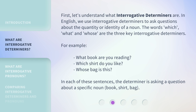First, let's understand what interrogative determiners are. In English, we use interrogative determiners to ask questions about the quantity or identity of a noun. The words which, what, and whose are the three key interrogative determiners.